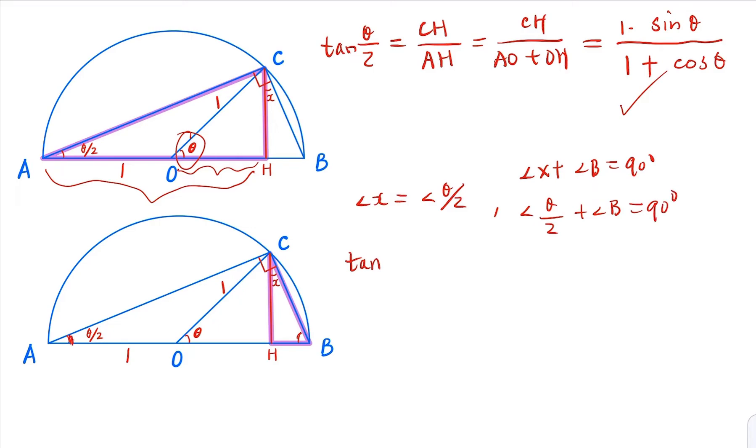This is half of theta. This B is added up to 90 degrees. So we claim that X equals half of theta. So half of theta equals tangent X. Now in the highlighted triangle, that would equal BH over CH.